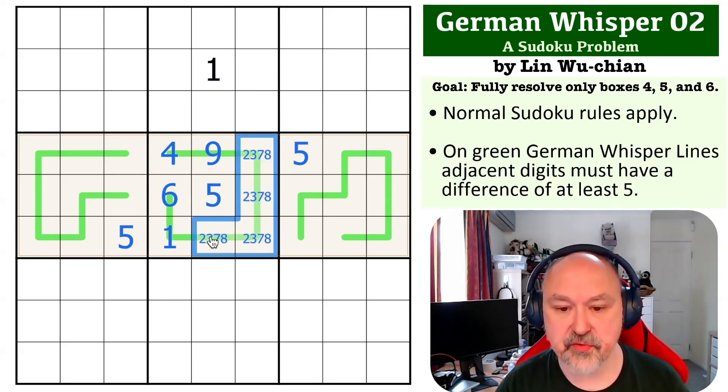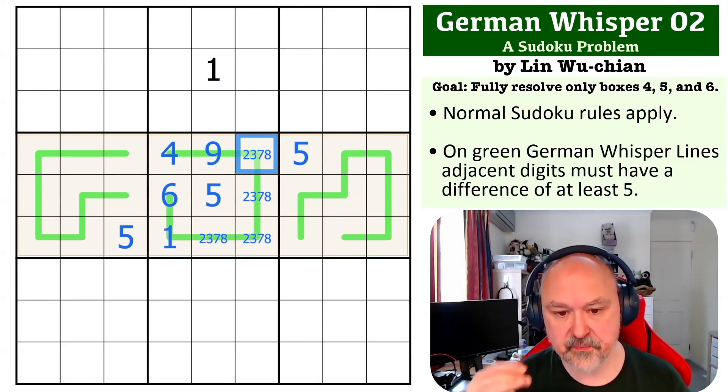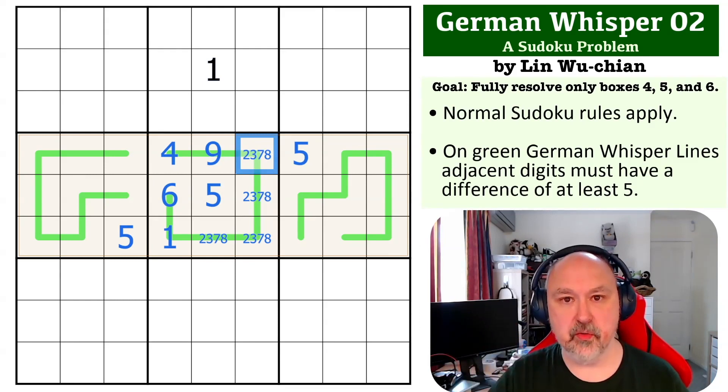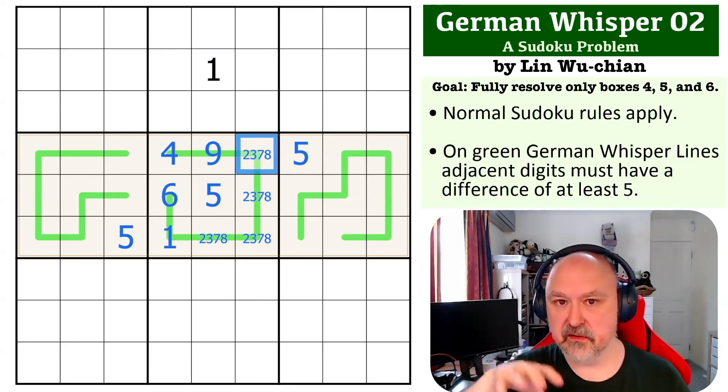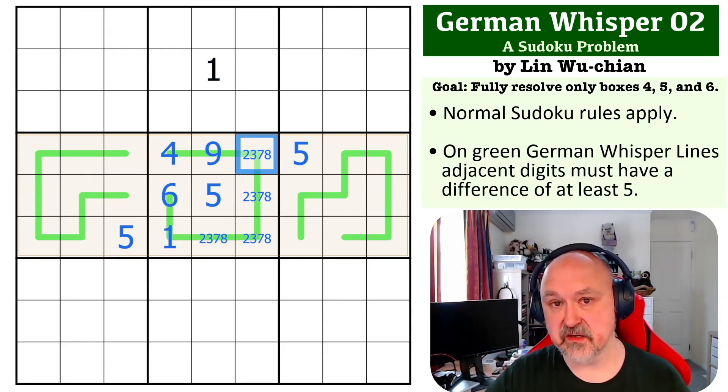Now the digits at the left are 2, 3, 7, and 8. We know the digits are going to alternate high and low, because this is a trend on any German whisper line. Anytime you can place a low or a high, they will always alternate high-low. Any digit from 1 to 4, if you make any digit that is 5 different, it will automatically jump to 6 to 9, and the same in reverse. Any digit from 6 to 9, 5 different will always be 1 to 4.